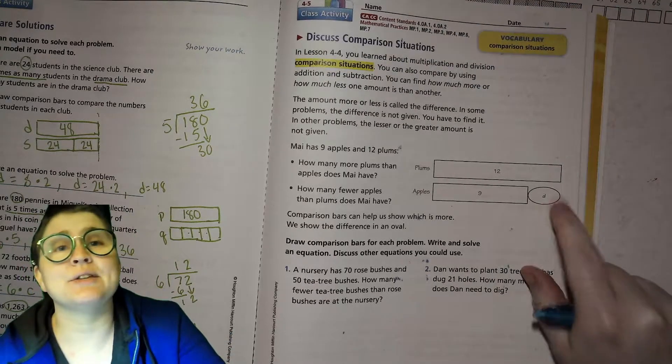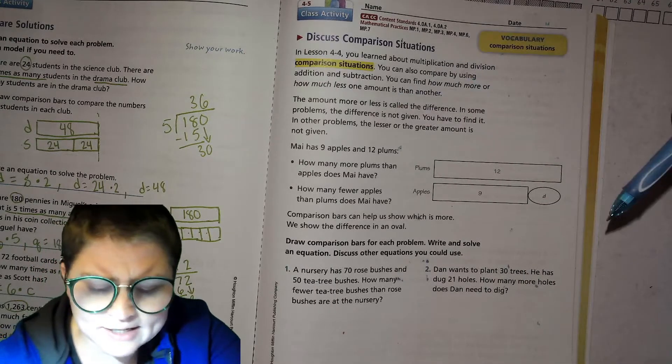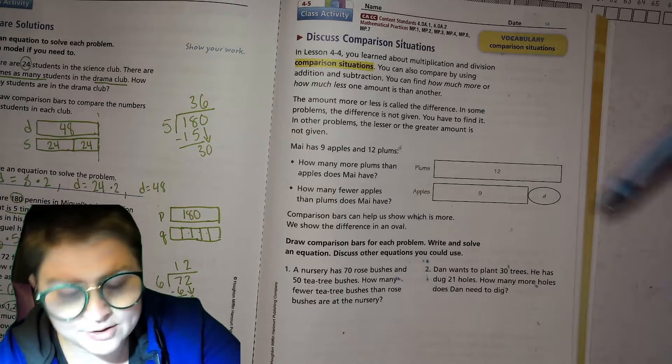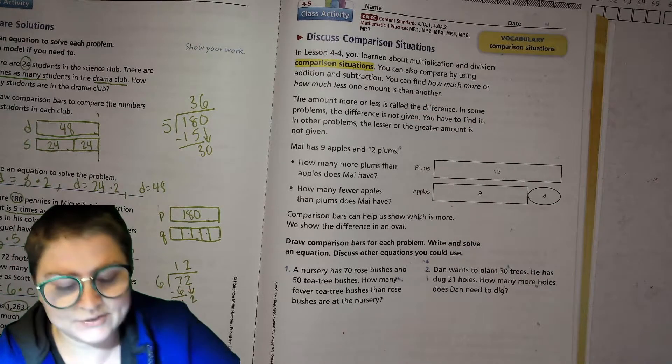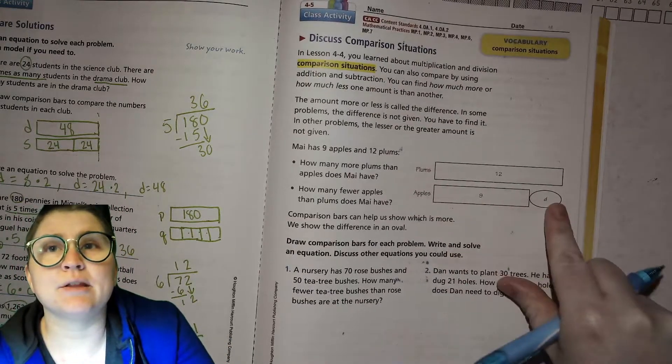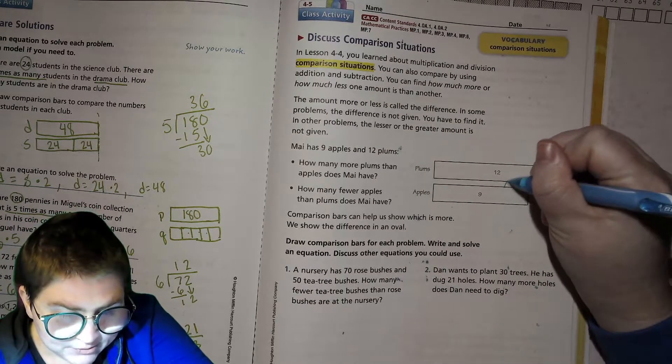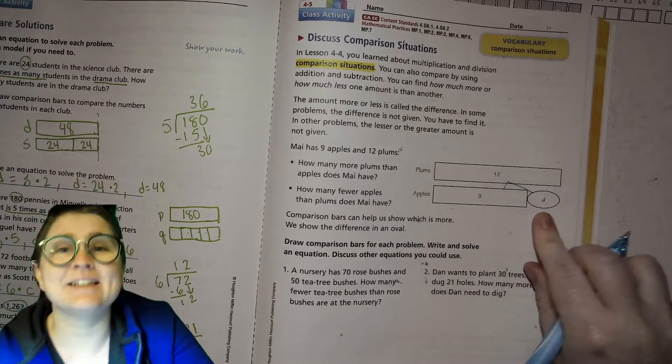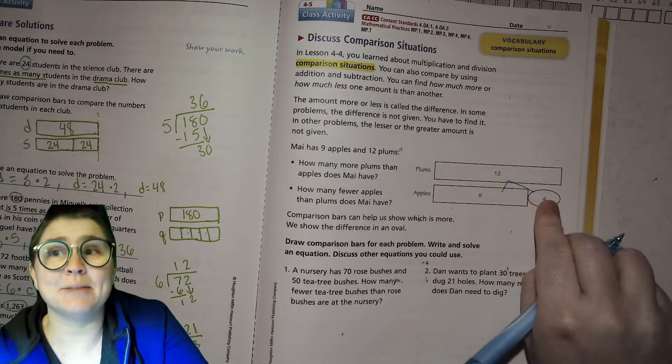The amount more or less is called the difference, and that's what's going to go in this difference bubble over here. In some problems the difference is not given - you have to find it. In other problems the lesser or greater amount is not given. Basically you have the big bar, the little bar, and the bubble - that's the difference. When you have the little amount and the difference together, it sort of makes like a math mountain that when you add them up together you'll get that bigger amount.